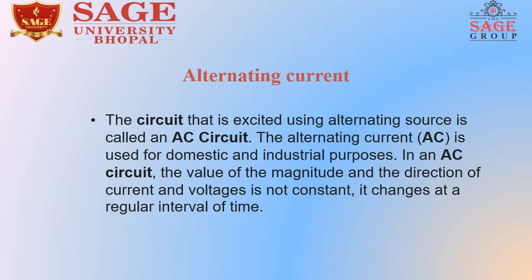What is alternating current? Alternating current that is excited using an alternating source is called an AC circuit. The alternating current AC is used for domestic and industrial purposes. In an AC circuit, the value of magnitude and direction of current and voltage is not constant — it changes at a regular interval of time.